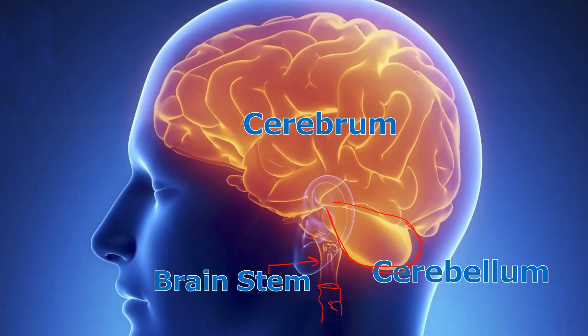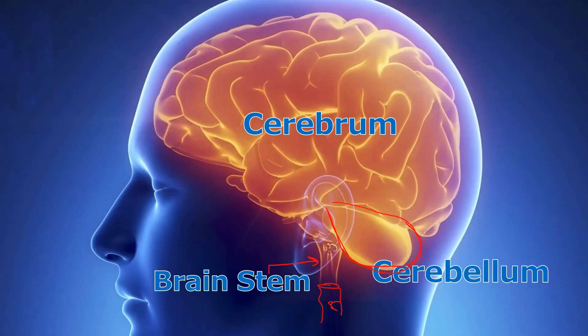When you're a little ball of cells as an embryo, and then as a fetus in utero, your brain certainly doesn't look like this adult brain. So how does it go from a few cells to a hollowed-out ball of cells? At what point do you say you're developing a nervous system, and how does it become the cerebrum, cerebellum, and brainstem? It all has to do with what are called embryological vesicles.